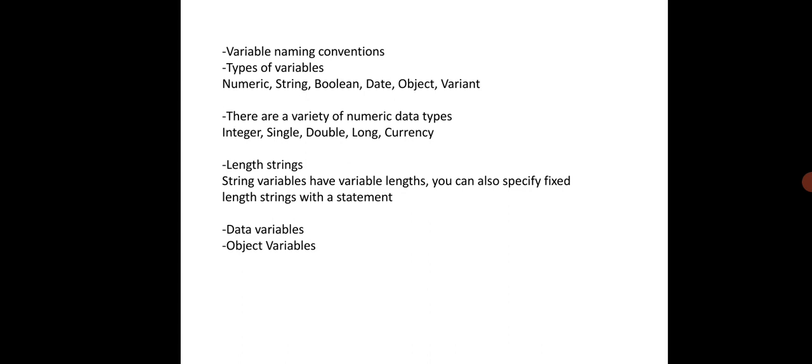String variables have variable lengths. You can also specify fixed-length strings with a statement like: Dim someText As String. There are also date variables — for example, year, month, day — and object variables. For example, Dim A As CommandButton, B As CommandButton. For A's caption you can write 'Hi', and for B's caption you can write 'True'. These are all the types of variables.